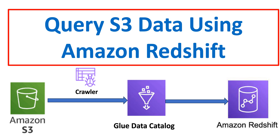In this video we are going to see how to query S3 data using Amazon Redshift — specifically, how to query S3 data without actually moving the data into Redshift. In a previous video I showed how to load data from Amazon S3 to Redshift and then query it, where there was actual physical data transfer from S3 to Redshift involved. But in this case, the data will be residing in S3 itself and we will still be able to query it from Redshift.